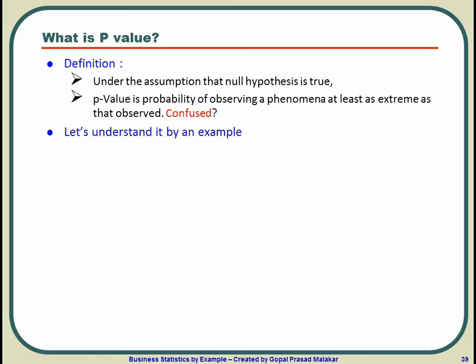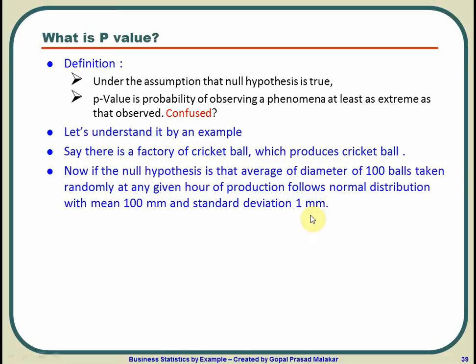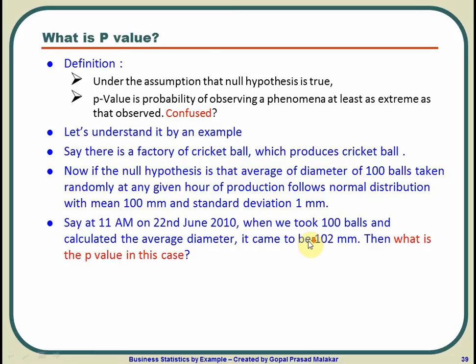Let's understand this by an example. Let's say there is a factory of cricket balls, and they have found that the null hypothesis is that the average diameter of 100 balls taken randomly at any given hour of production follows a normal distribution with mean 100 mm and standard deviation 1 mm. At 11 am on 22nd June, you took 100 balls and found the average diameter to be 102 mm. Then what is the p-value in this case?